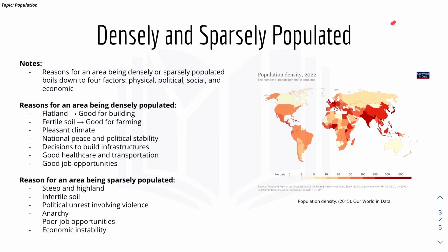The reasons for an area being densely or sparsely populated come down to four factors: physical, political, social, and economic. For densely populated areas, physical factors include flat land, fertile soil, and a pleasant climate — good conditions for building and farming, which promotes population growth. Politically, there is national peace and stability, plus good infrastructure, making people want to move in. Socially and economically, good healthcare and good job opportunities attract people to those areas.